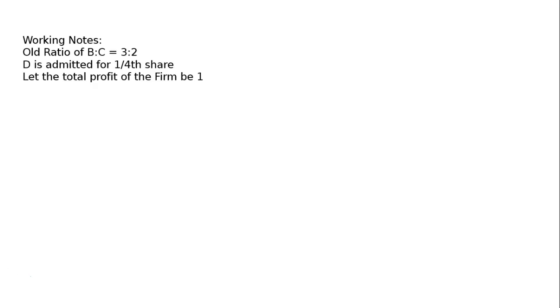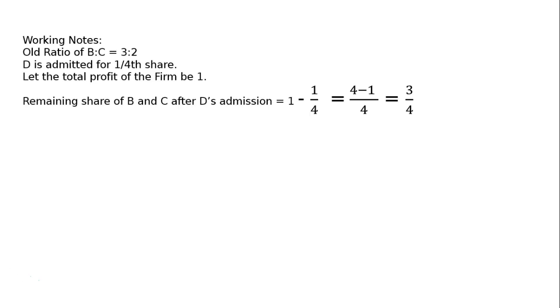Working notes: Old ratio of B to C is equal to 3 to 2. D is admitted for one-fourth share. Because the goodwill money brought in cash is always shared in the sacrificing ratio, remaining share of B and C after this admission is equal to 1 minus one-fourth, that is 3 upon 4. This 3 upon 4 will be shared among B and C in the ratio of 3 to 2.